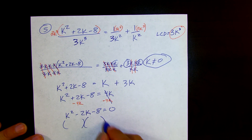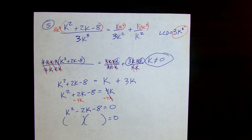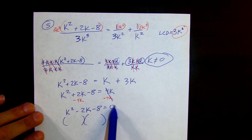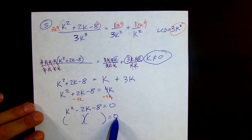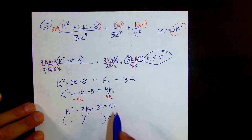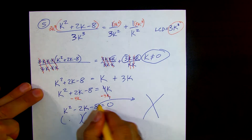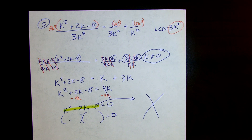Now we're ready to do the x method and find our answers. When we have it equal to 0, we want to find two expressions whose product equals 0 — because if one factor is 0, the product is automatically 0. We've set this trinomial equal to 0, so we can find our roots quickly using the x method for k squared minus 2k minus 8.